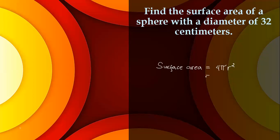So, surface area equals 4 times pi, which is 3.14 in decimal. But in fraction, the pi here is 22 over 7, and then the radius squared.